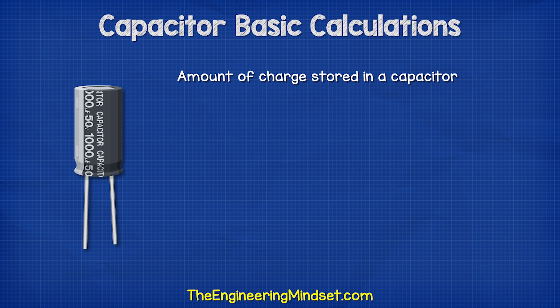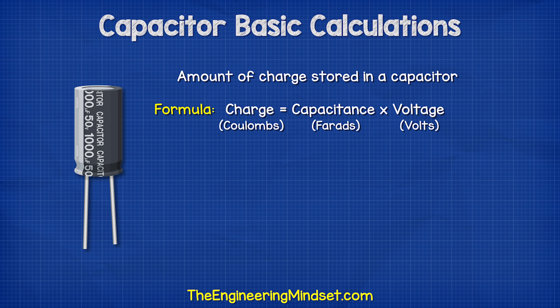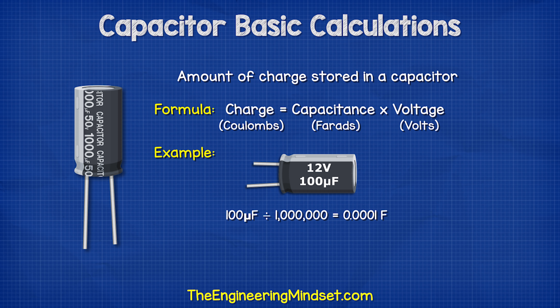The amount of charge stored in a capacitor is calculated using the formula: charge equals capacitance in farads multiplied by the voltage. So for this 12 volt, 100 microfarad capacitor, we convert the microfarads to farads, then multiply this by 12 volts to see it stores a charge of 0.0012 coulombs.